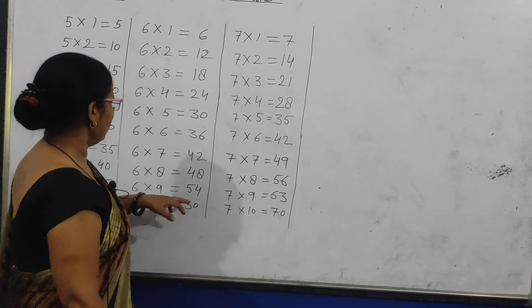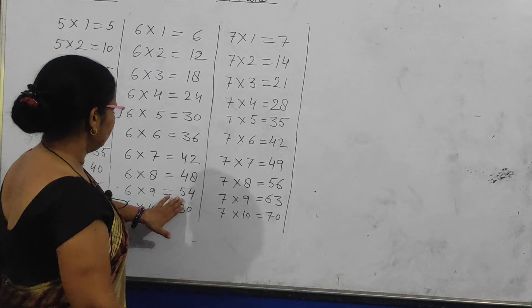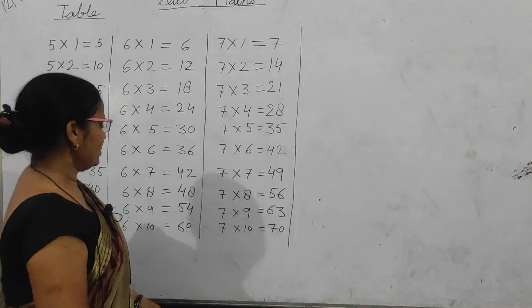Continuing with 6×7=42, 6×8=48. Thank you.